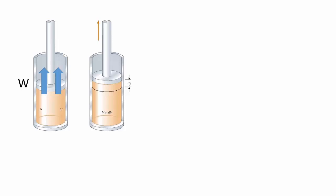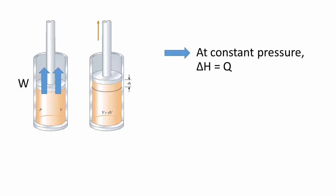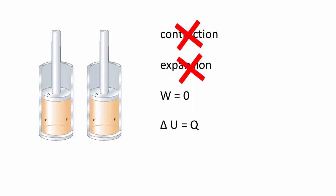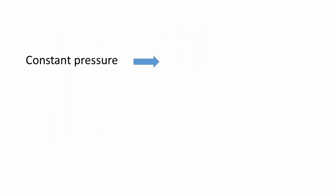As we saw earlier, the enthalpy change is equal to the heat of the reaction if that reaction occurs under a constant pressure. But what if the reaction occurs under a constant volume? In that case, there is neither a contraction nor an expansion, and if so, no work is done. Therefore, the internal energy change given by heat plus work simply becomes the heat. So for any reaction at constant volume, the heat of reaction is the change in the internal energy.